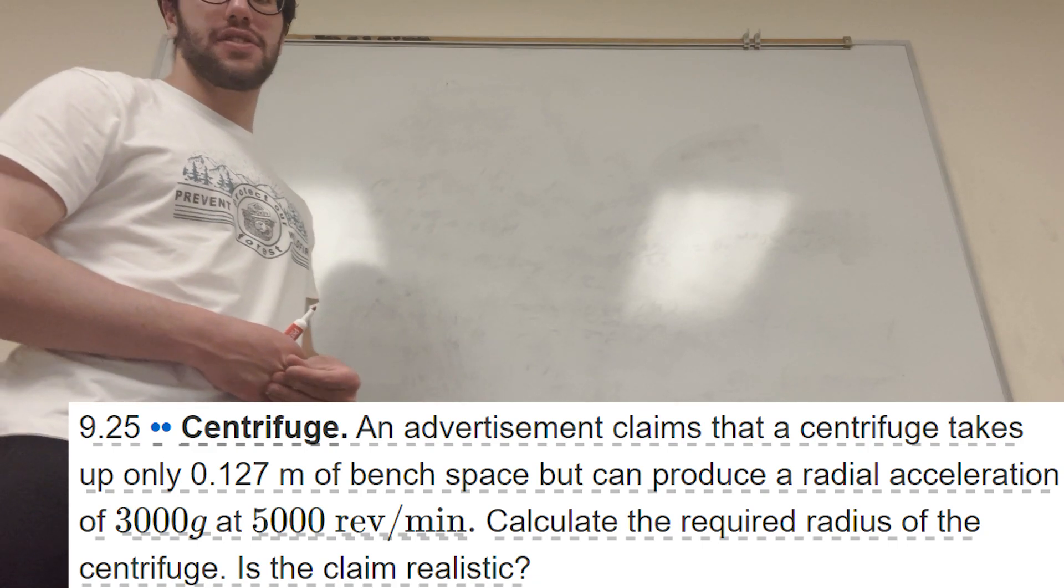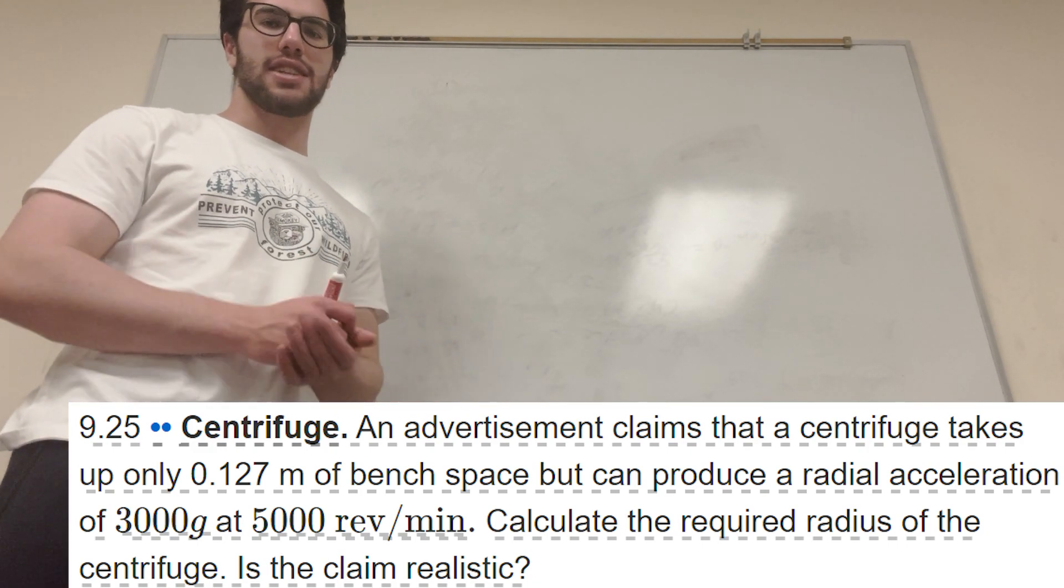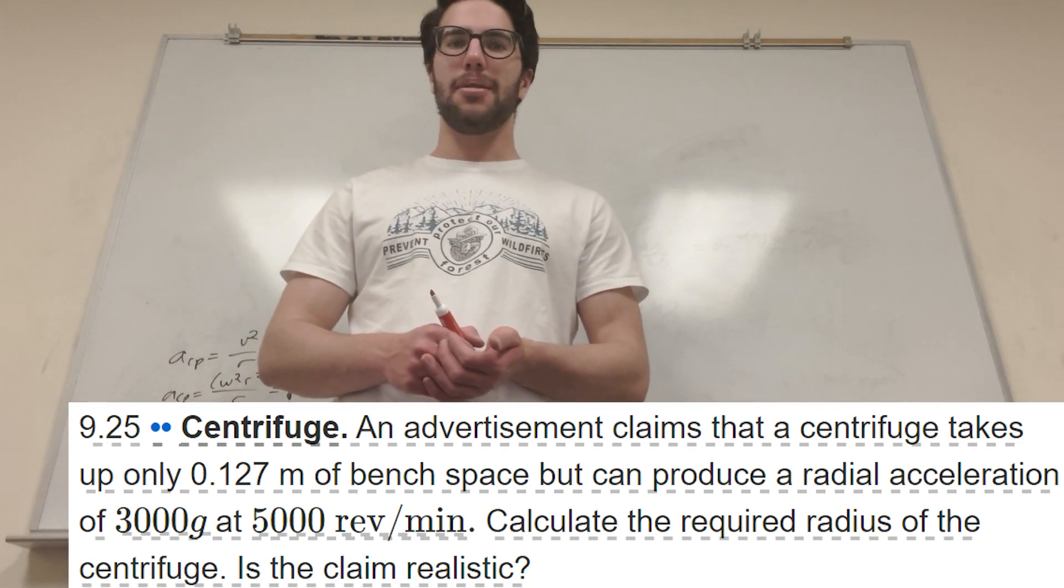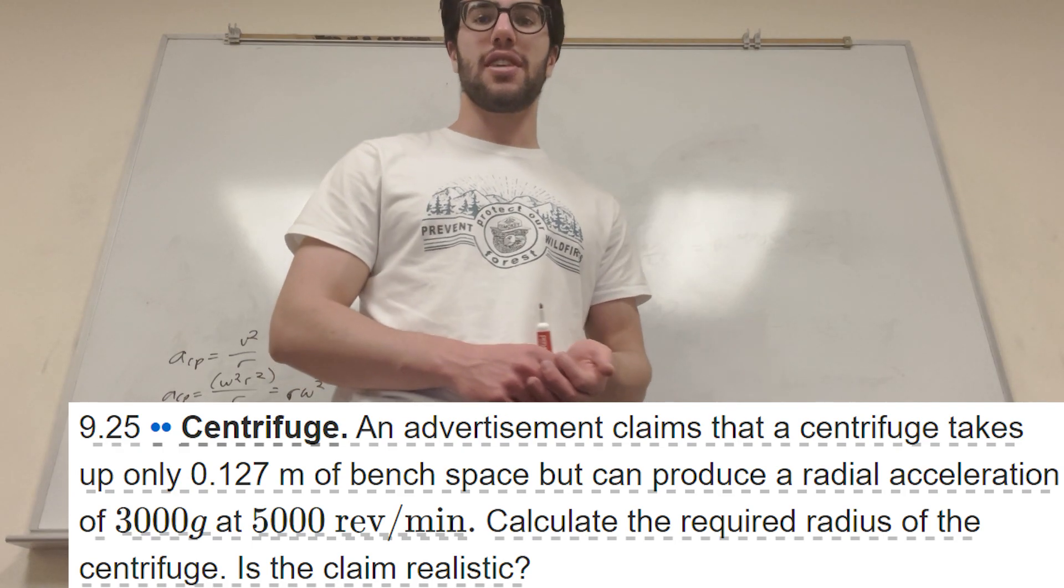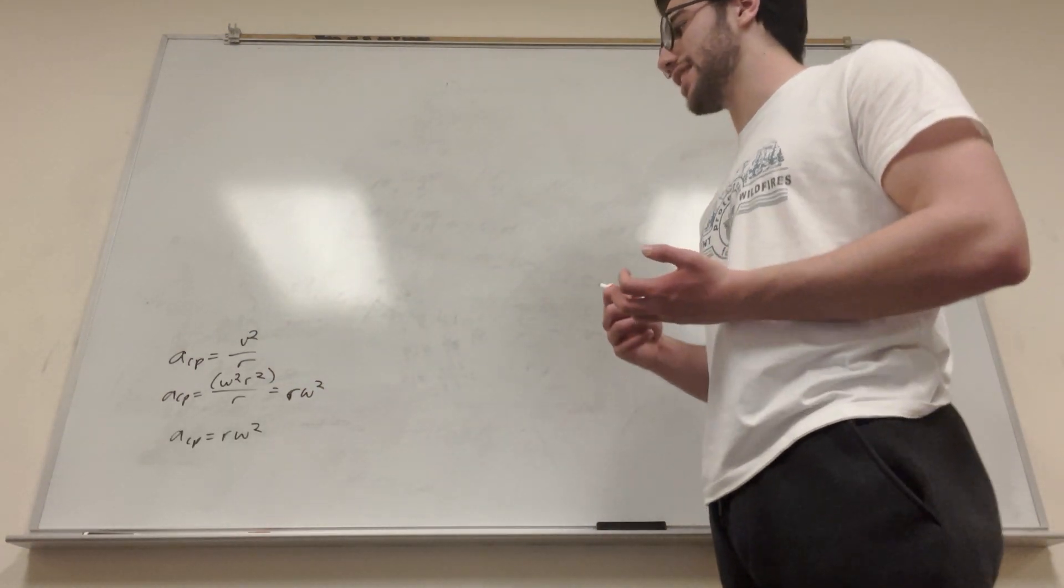It says an advertisement claims that a centrifuge takes only 0.127 meters of bench space, so that's its diameter, but it can produce a radial acceleration of 3,000 times that of gravity at 5,000 revolutions a minute. Calculate the required radius of the centrifuge, and is it accurate?